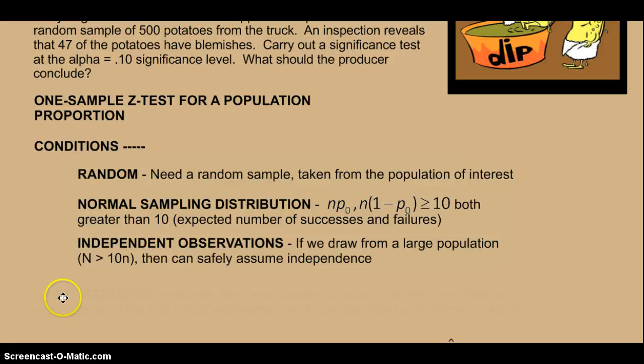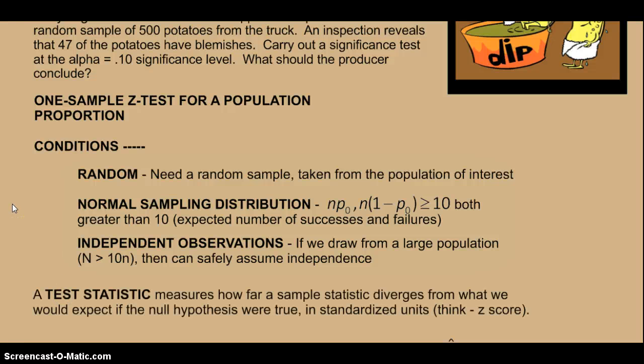After we have everything, we're going to do something new. We're going to compute something called the test statistic. And what the test statistic does is it measures how far our sample is from what we would expect to happen if the null hypothesis is true. Again, we always know there's going to be variability in samples. We'll rarely get exactly what's hypothesized, but how unusual is our sample?